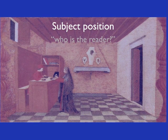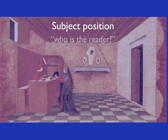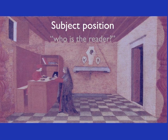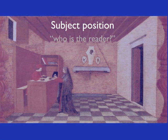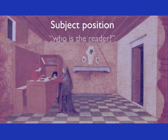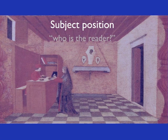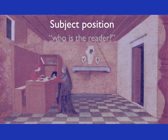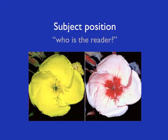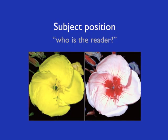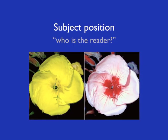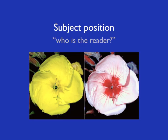Think of a perspective painting. The vanishing points in the painting dictate where to place your gaze in order to make a 2D surface appear 3D. Your gaze is encoded into the picture's surface — in the same way, perhaps a flower's subject position is that of a bee.